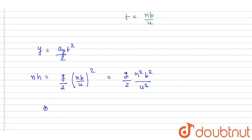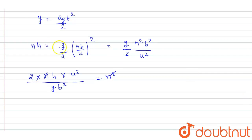here, if you see, you got this relation: nh into u² into 2, divided by gb², equals n². This n and n will get cancelled out, and finally you will write n equals 2hu² by gb².